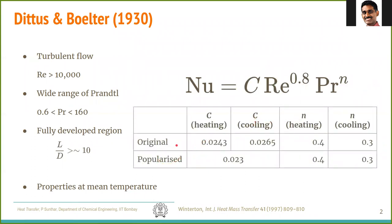The original Dittus-Boelter expression used two different constants: 0.243 for heating and 0.265 for cooling. Heating means heat is coming from outside the pipe to the fluid flowing through it; cooling is the other way — the hot fluid goes through the pipe and cools, with heat taken away by the surface. The exponents were 0.4 for heating and 0.3 for cooling.